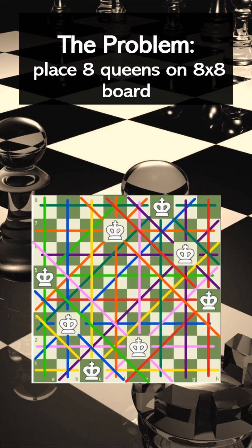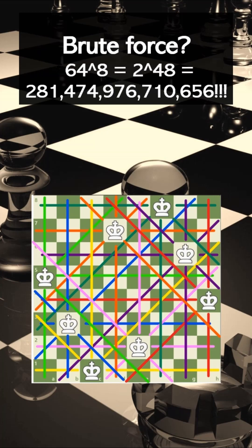An easy solution might seem to brute force this and just try every combination and check which are valid. But such a solution would leave 281,474,976,710,656 positions to be considered.